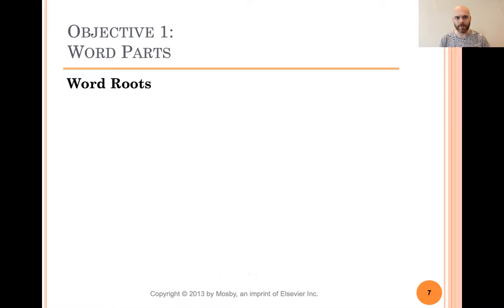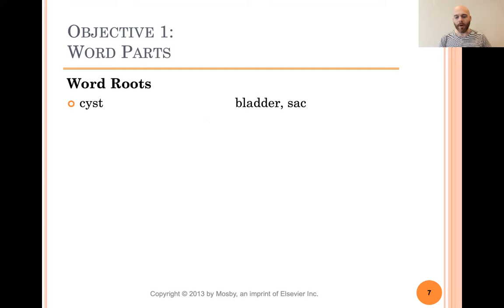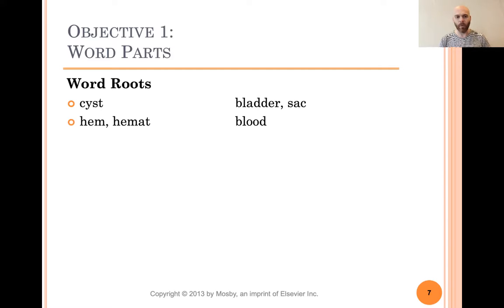So let's start building some words — let's do some word parts. Cyst: you may have heard cyst before. It can mean bladder, as in the urinary bladder, or it can be a fluid-filled sac — it can be either one of those. Heme or hemat means blood. Heme or hemat always means blood.